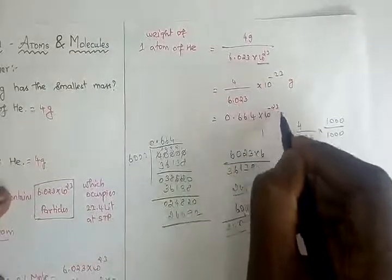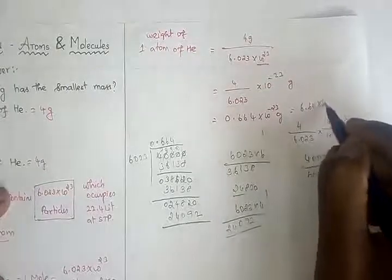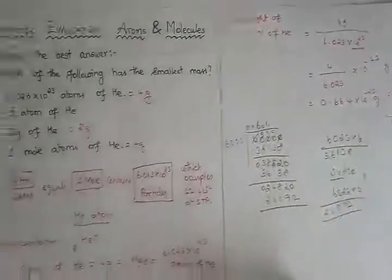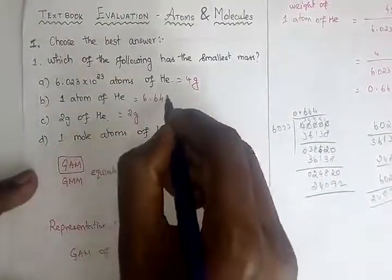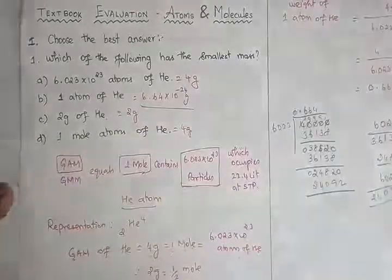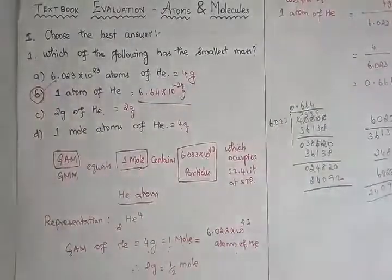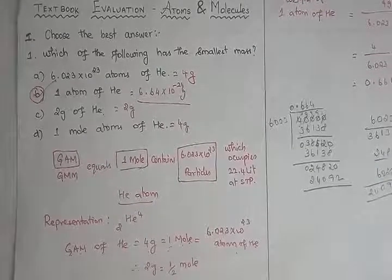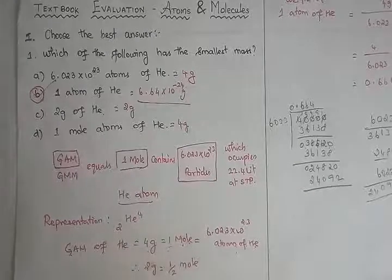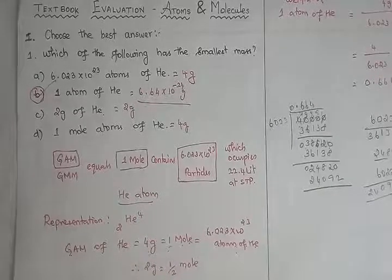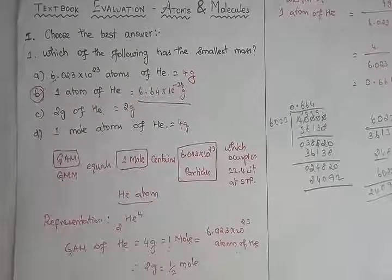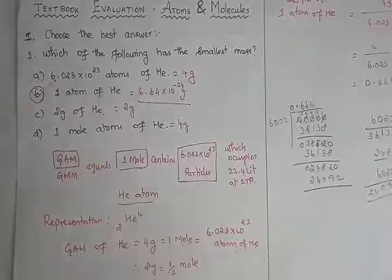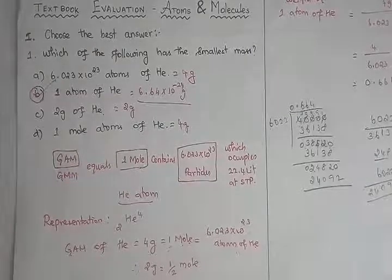Therefore, one atom of helium weighs 0.664 × 10⁻²³ grams, which equals 6.64 × 10⁻²⁴ grams. This is the smallest mass among all options, so option (B) — one atom of helium — is the correct answer. I hope this video is very helpful for learning. The concept behind this one-mark question is very important. Thank you, dear children. If you like this video, share it, subscribe, and click the bell button to get notifications quickly. Thank you!